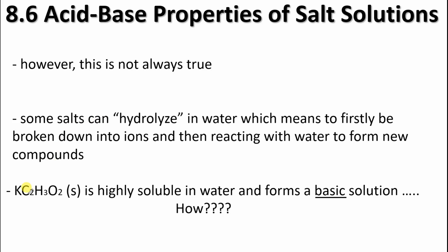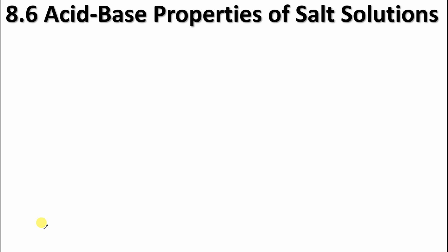So here's an example here. This is KC2H3O2. This is potassium acetate, and it is soluble in water. But when you put it in there, it forms a basic solution. How is this possible? Well, the first thing we need to do is investigate how this compound breaks down, which is what I have displayed here. We've got the potassium ions and the acetate ions over here.